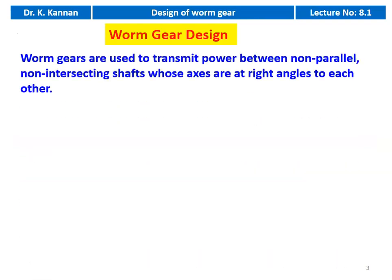Worm gears are used to transmit power between non-parallel, non-intersecting shafts whose axes are at right angles to each other. In the earlier designs, we designed the spur gear and helical gear — they transmit power between parallel shafts. And the bevel gear transmits power between non-parallel shafts, but those shafts are intersecting.